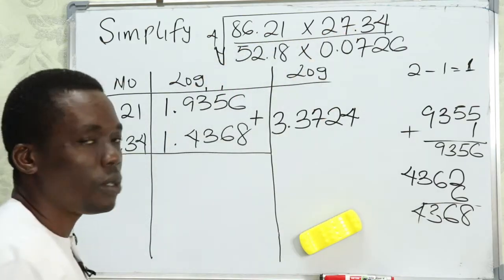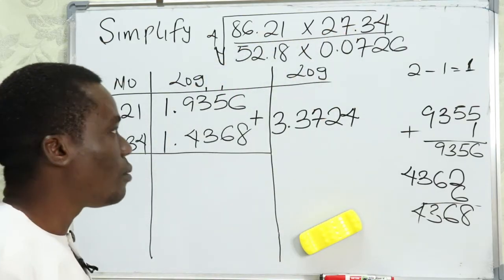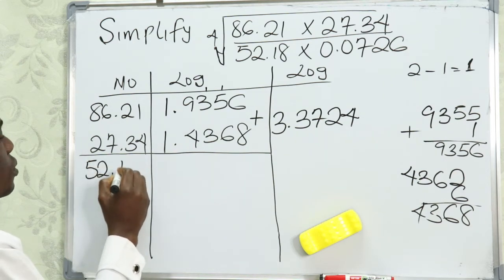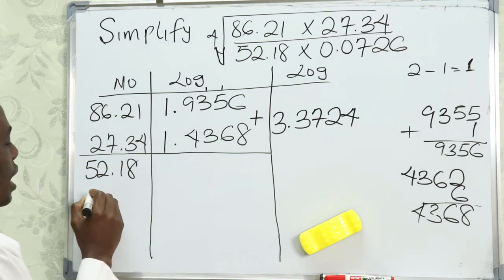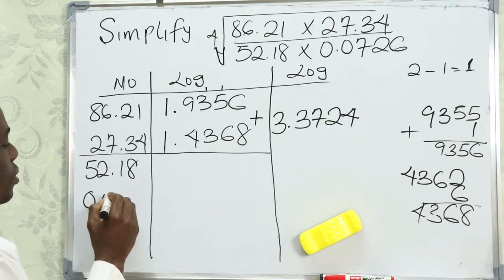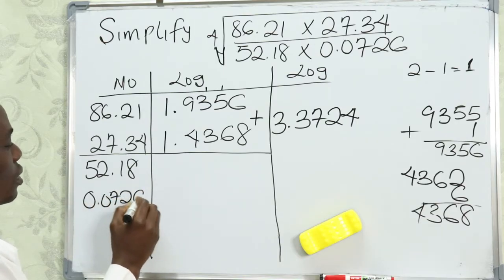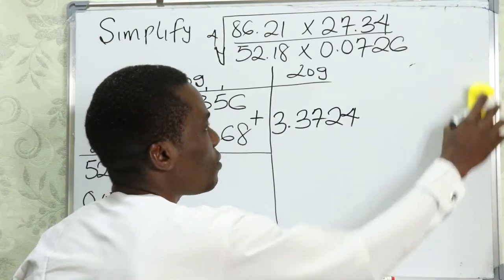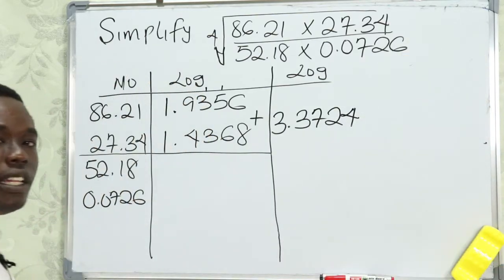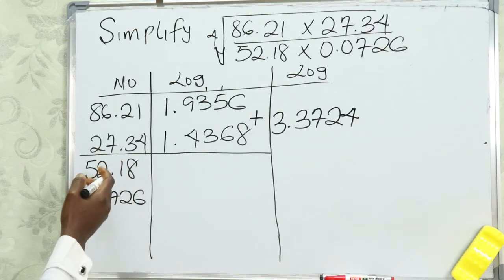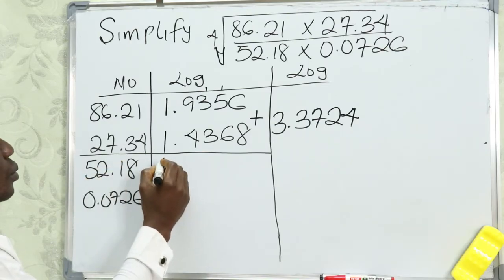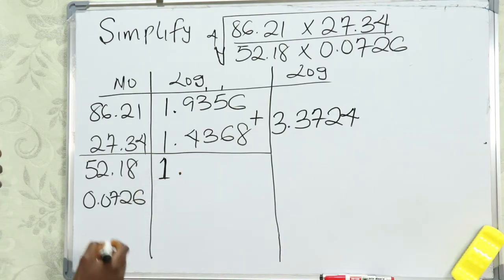Now we move to the denominator of the main fraction, which has 52.18 and 0.0726. Let's find the characteristics of these values. The characteristic of 52.18 will be 1, while for 0.0726 we need to use the standard form because it will give us a negative characteristic.